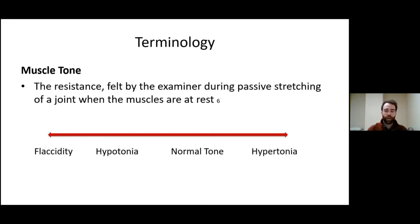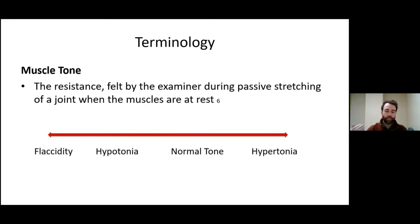That brings us to the important term: tone. We commonly think of tone as how firm or tight a muscle is, but a more precise definition is the resistance felt by the examiner during passive stretch of a joint when the muscles are at rest. After an injury to the nervous system such as a stroke, we end up with altered tone. Tone exists on a continuum — normal tone in the middle, hypertonia where you feel resistance or rigidity, and at the lower end hypatonia or flaccidity where there is absolutely no tone. The nervous system is unable to produce tone to protect the joint from passive movement.